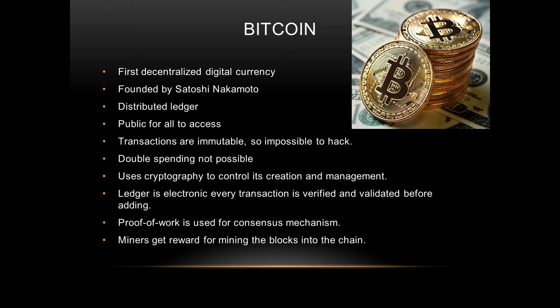Double spending is not possible in Bitcoin due to its protocol. It uses cryptography to control its creation and management. There are about 21 million bitcoins which can ever be mined. To control the mining process there is a difficulty mechanism — as more bitcoins are mined, the difficulty increases so that fewer bitcoins are mined per period of time.